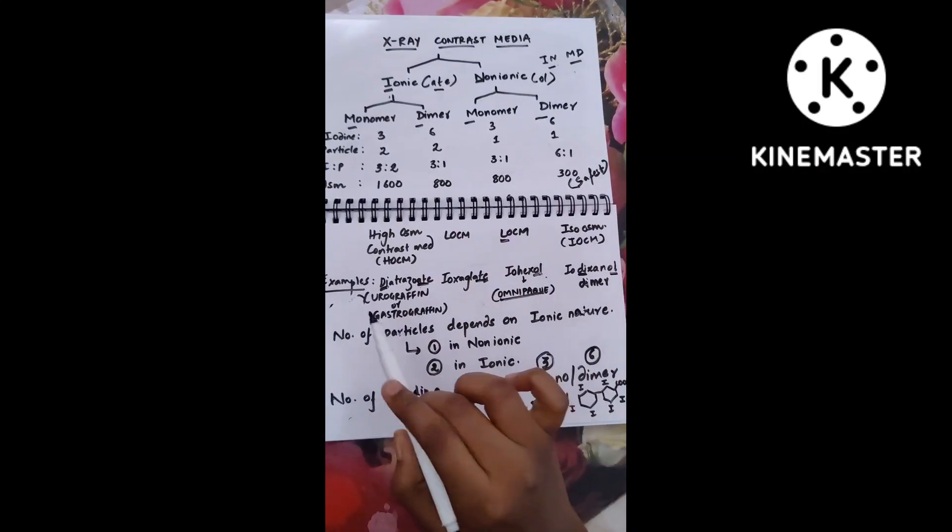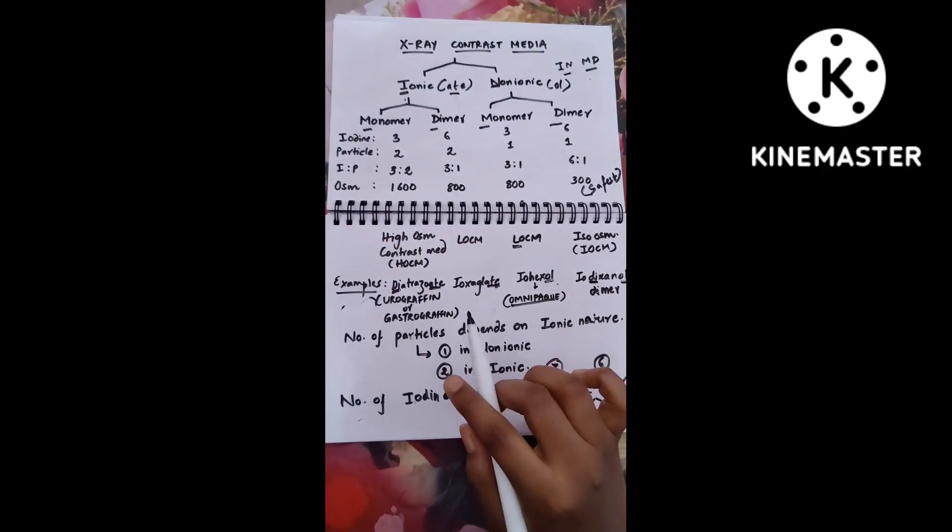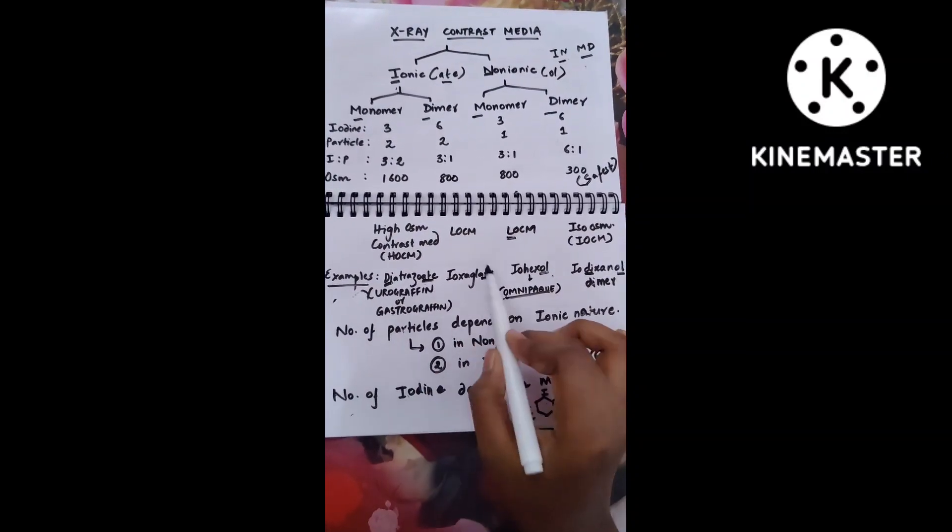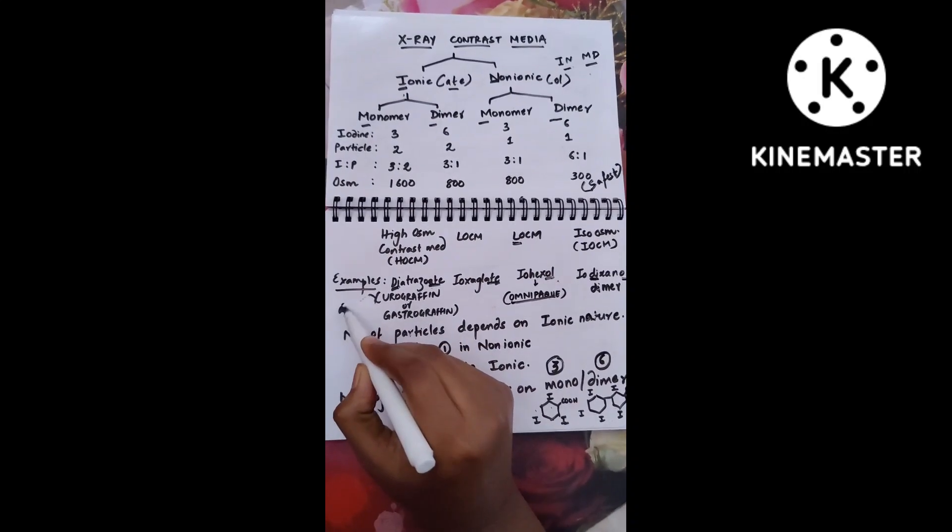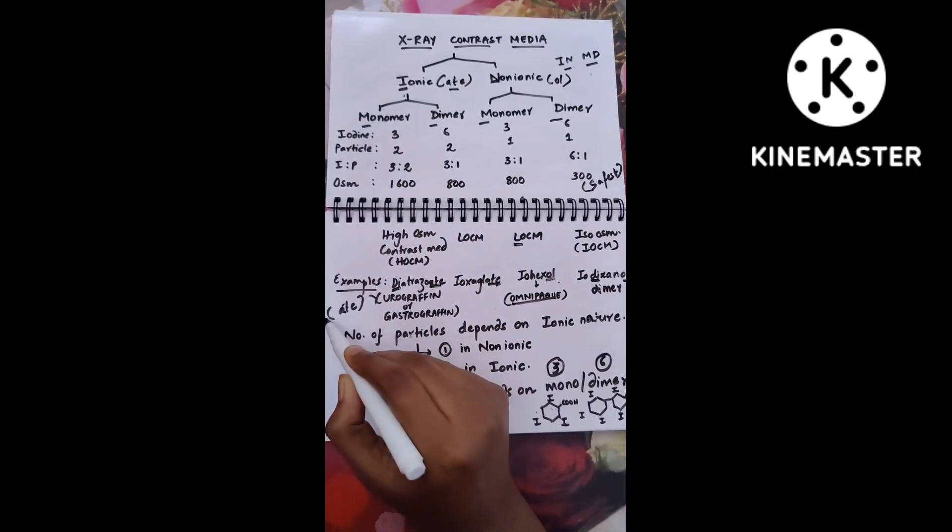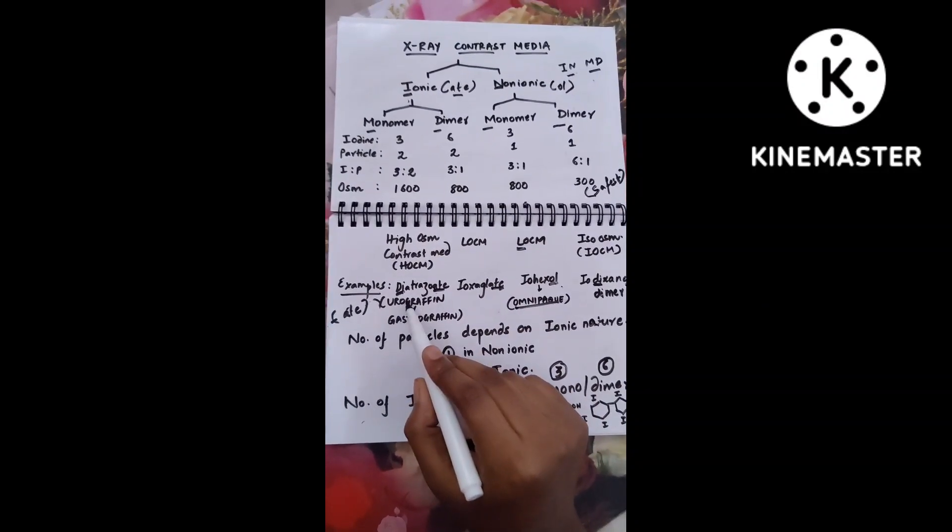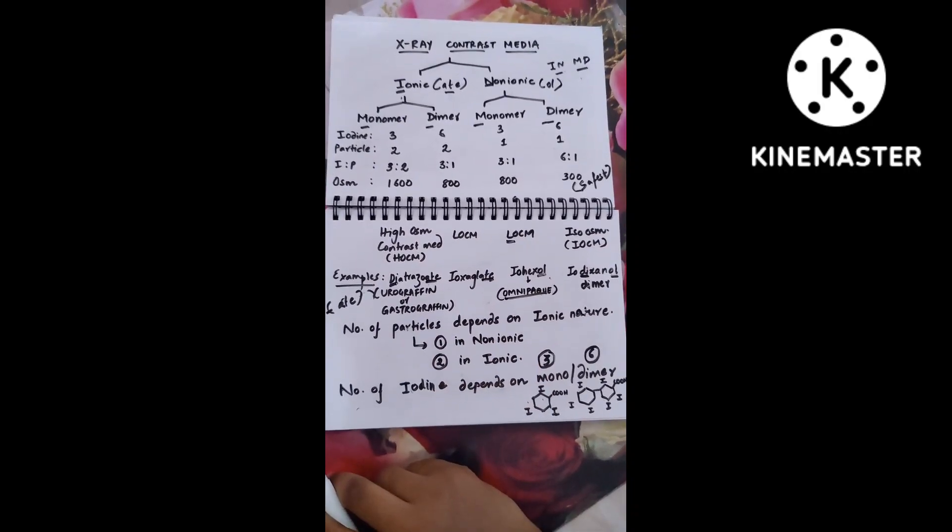Iohexol is otherwise called omnipack, and diatrizoate is urografin or gastrografin. When you talk about the examples, all 'ates' other than ioxaglate come under ionic monomer. If you find any name with 'ate' in the end and it's not ioxaglate, then it comes under ionic monomer examples.